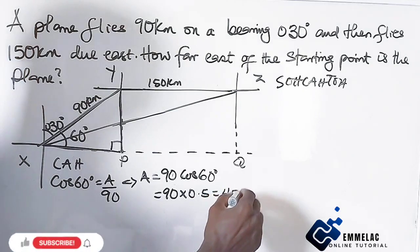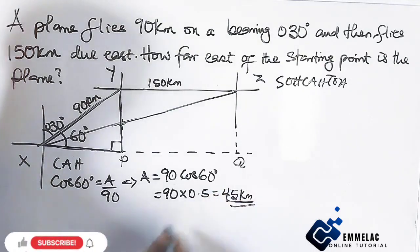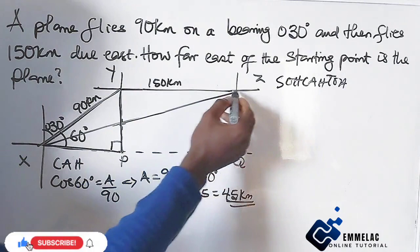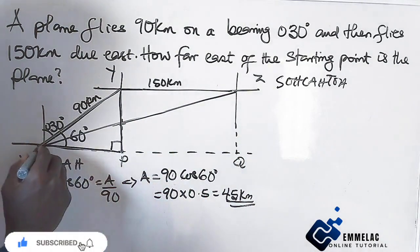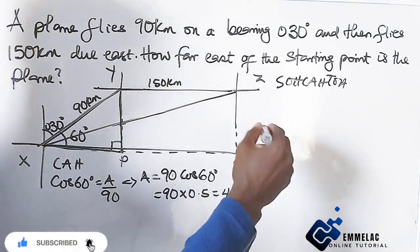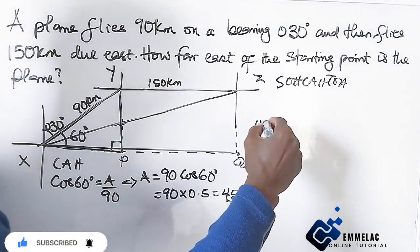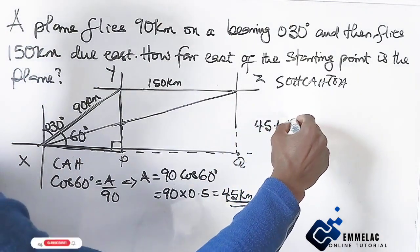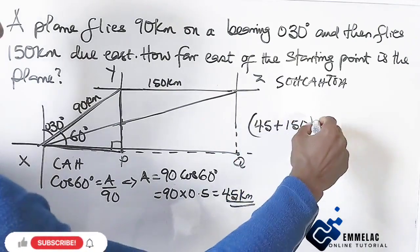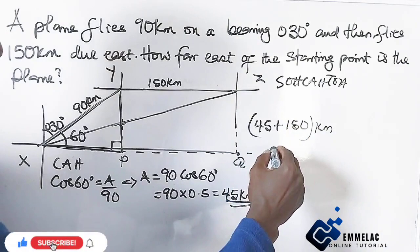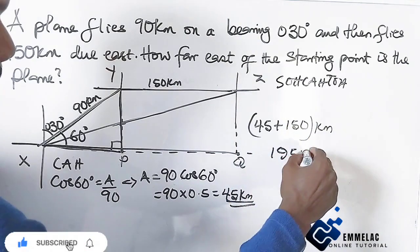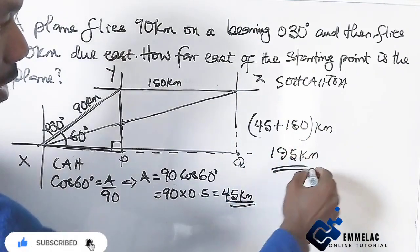Now from here to here is 150 and from here to here is 45 kilometers. So from here down to this place will now be 45 plus 150 kilometers, so here we have 195 kilometers. That's right.